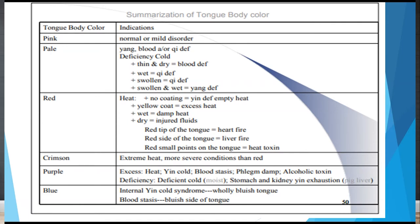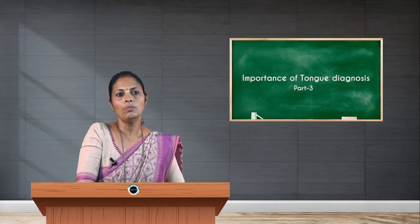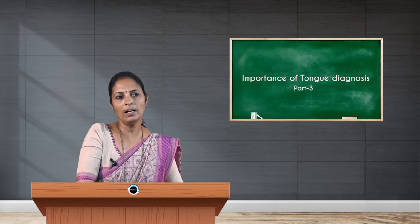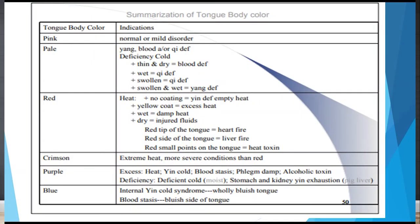Dryness on a red tongue indicates disturbance in body fluid. A red tip indicates heart fire excess; red sides represent liver fire; a red tongue with small points indicates heat toxicity. Crimson red indicates a more severe external heat condition. Purple color indicates excess heat, cold blood stasis, phlegm damp, and may also be due to alcoholic toxicity. Blue color indicates internal cold syndrome; wholly bluish tongue or blue at the sides can also represent blood stasis.